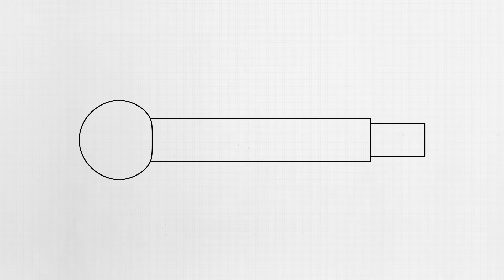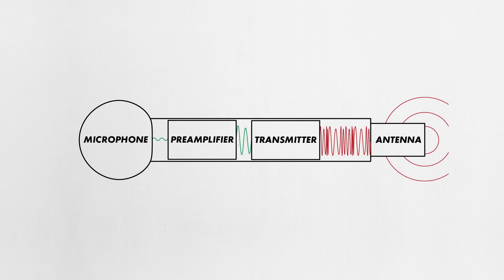First, let's look at the core components of an analog wireless handheld microphone. Inside a wireless handheld transmitter like this one, you'll find the microphone element itself and a preamplifier that boosts the analog audio signal up to a usable level. Then that analog signal is sent to the transmitter, which modulates a much higher frequency carrier signal that can be broadcast wirelessly. This might be hard to imagine if you're not an RF engineer — and I know this because I am not an RF engineer — but luckily all you need is a general understanding.